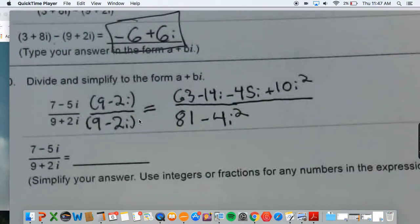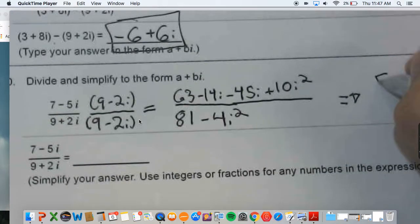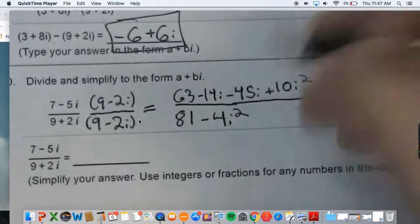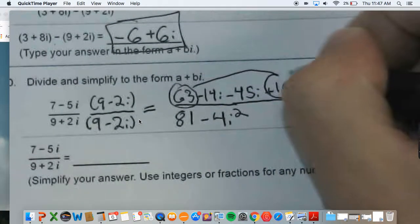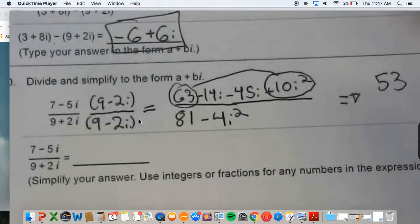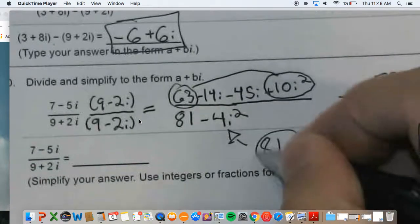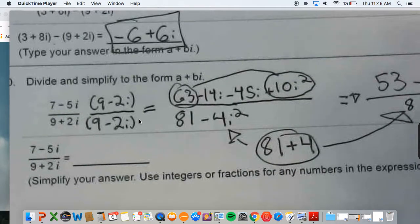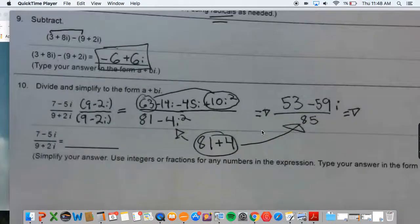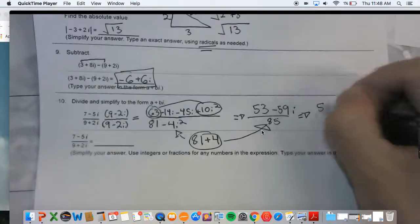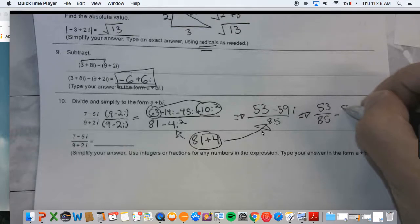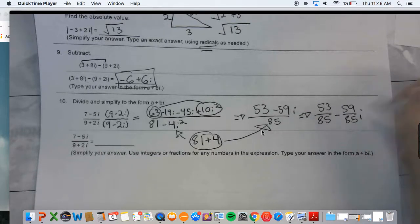If we clean this up a little bit, 10i squared is pretty much just going to deduct 10. So we can rewrite this as 53. So 63 minus this 10. These are like terms. i squared, I know, is negative 1. We can then combine our i terms, which is going to subtract 59. Our denominator could be rewritten as 81 plus 4 now. So if we rewrite that over here, it's 85. Make sure 59i is there. As two fractions, we could separate this to 53 over 85 minus 59 over 85i. So when they say they want the answer in a plus bi form, this is what they mean.